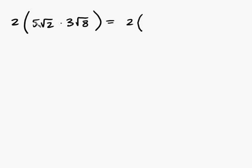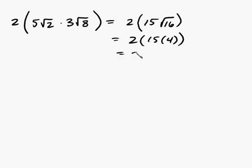So, let's say we have 2 times the quantity 5 root 2 times 3 root 8. So, basically this will be equal to 2 times the quantity 5 times 3 is going to be 15. And root 2 times root 8 is going to be root 16. So, that's going to be equal to 2 times 15 times 4. And this is going to be equal to 2 times 60. And that's going to be equal to 120.